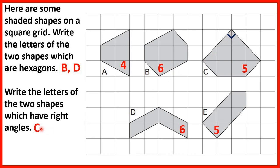If we look at shape C, this angle at the top looks like it might be a right angle. We can go down two and across two to get to the line, and in the other direction again down two and across two. So we're going down and across by the same number of squares, meaning this angle is a right angle. So C is one of our shapes. And shape E also clearly has a right angle, so E is our other shape.